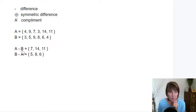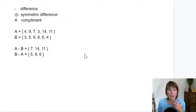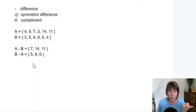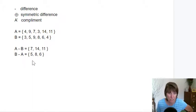So A minus B gives those three elements, and B minus A gives those three. They don't need to be the same number — you can subtract and get different amounts. So A minus B might have 6 elements and B minus A might have 2. This one did turn out that they're the same number, but that's not always the case.